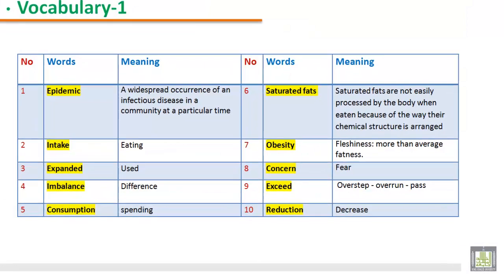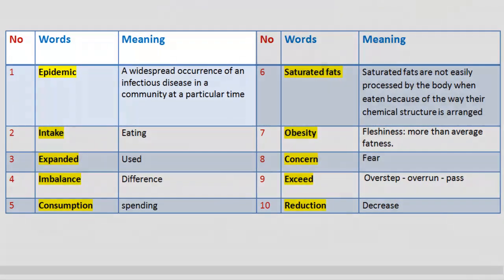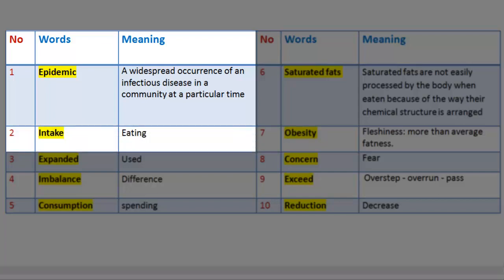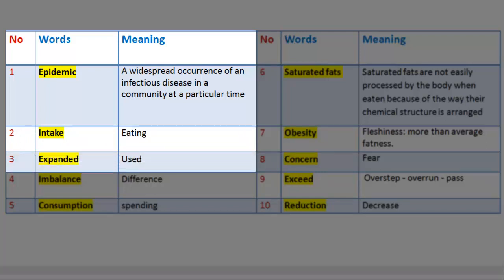Vocabulary 1. Number 1. Word: Epidemic. Meaning: A widespread occurrence of an infectious disease in a community at a particular time. Number 2. Word: Intake. Meaning: Eating. Number 3. Word: Expanded. Meaning: Used.